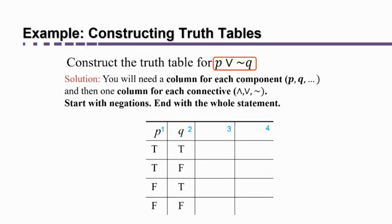Just as we did when we worked out the problems in your groups, you're going to start with the negations of individual statements, and then you're going to end with the whole statement, and then sometimes you'll need columns in between. So let's look at for P or not Q, starting with that standard form of a two-component statement. P is true or true or false or false. Q is true, false, true, false.